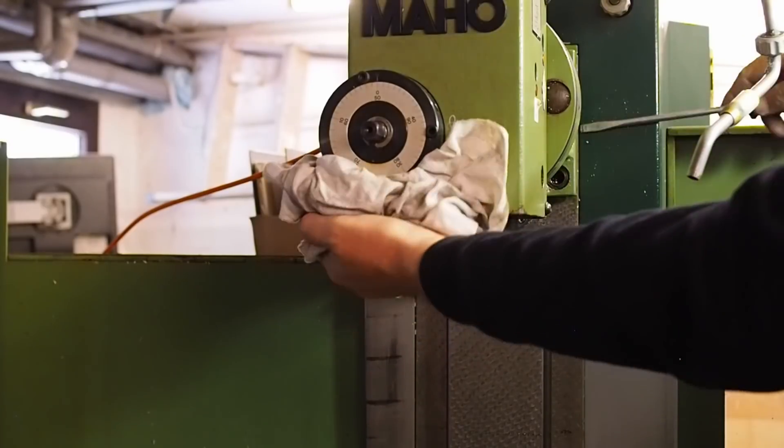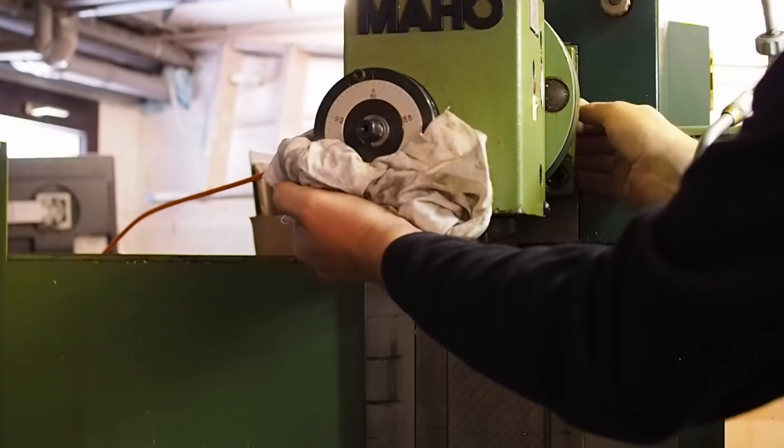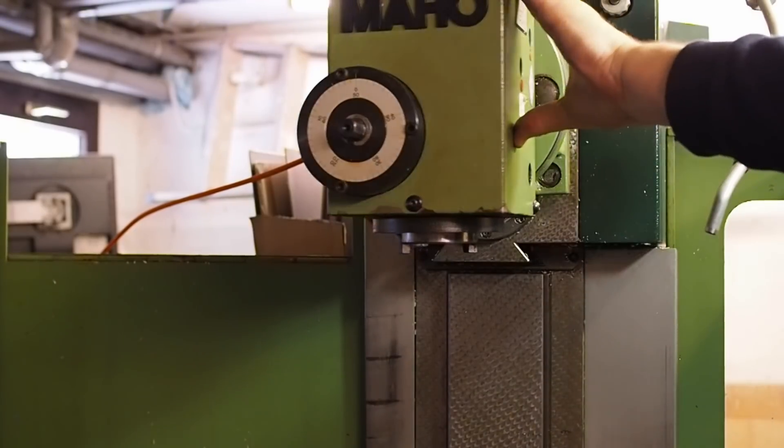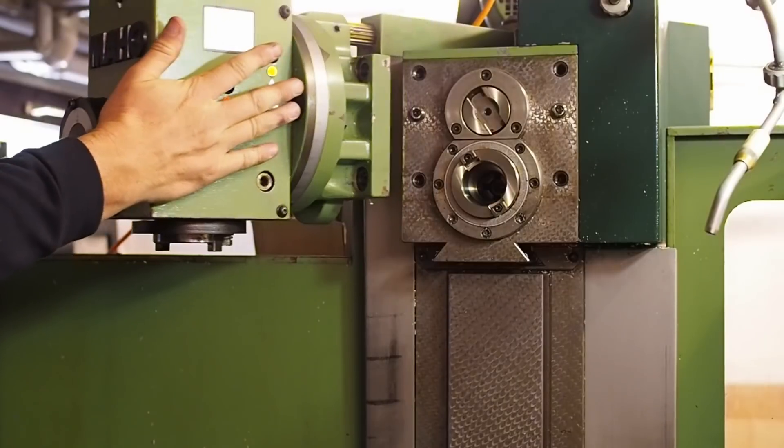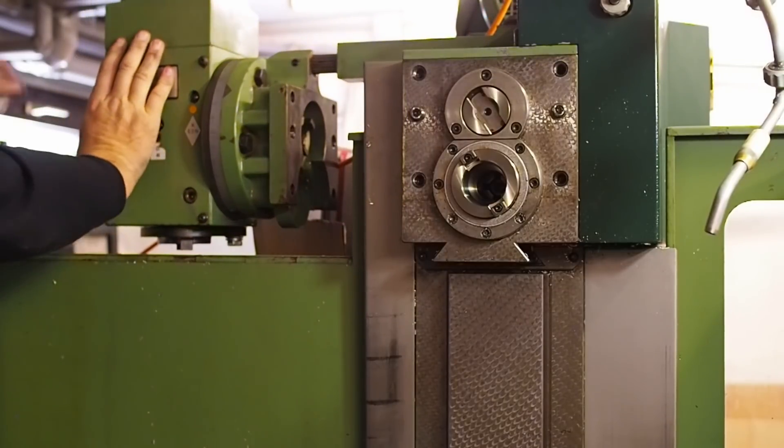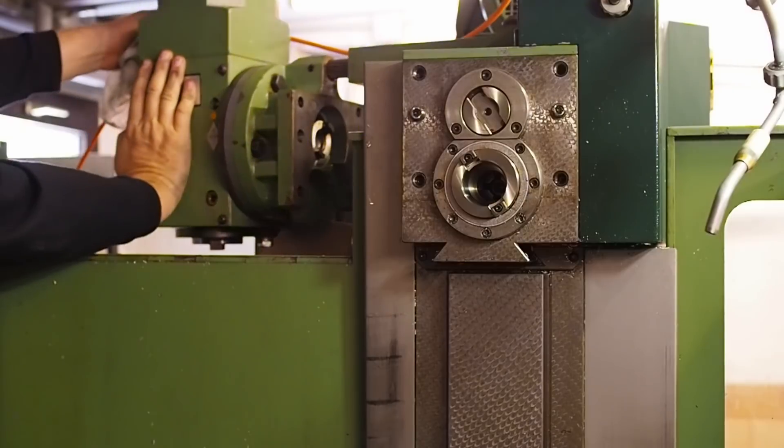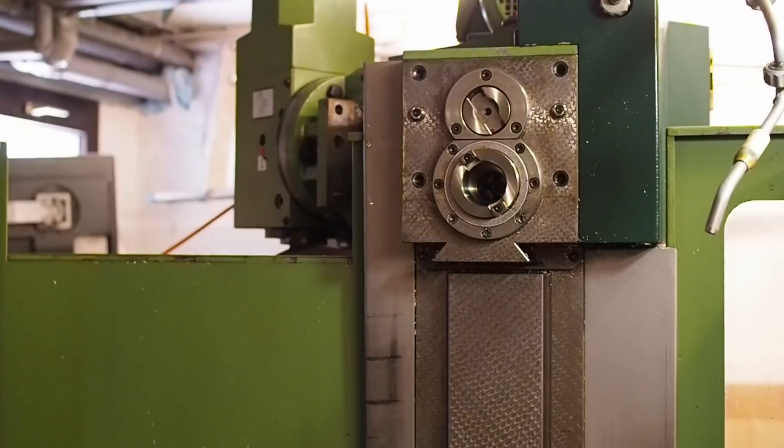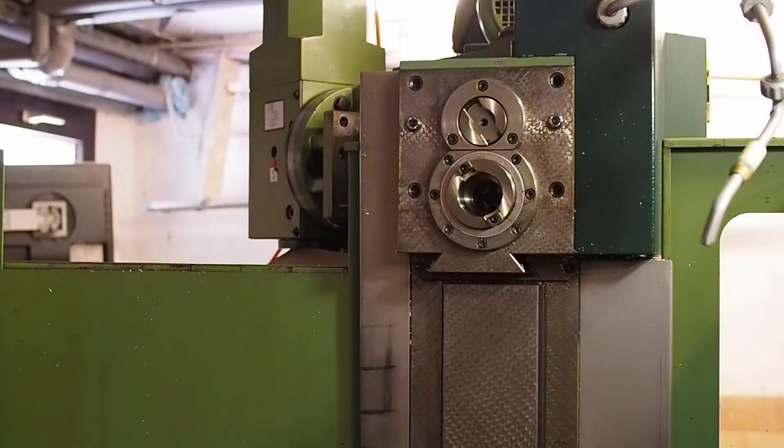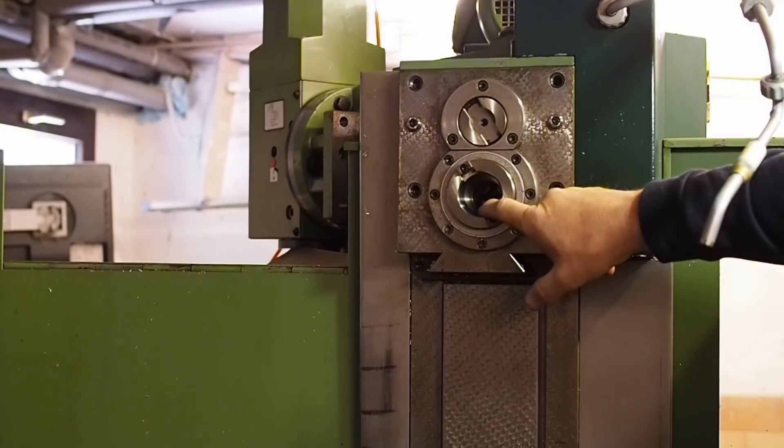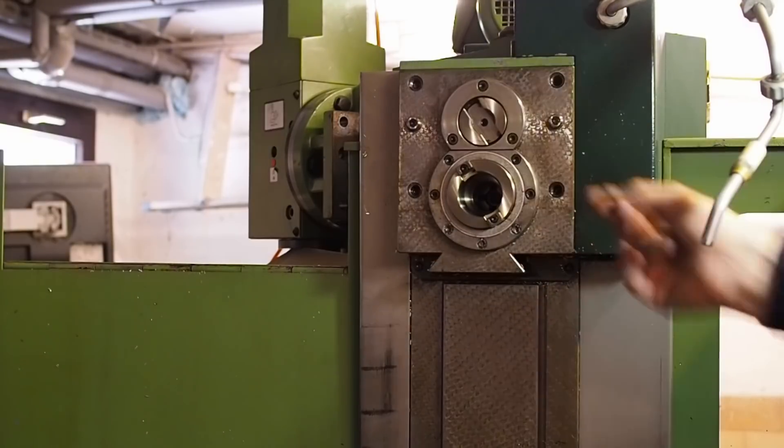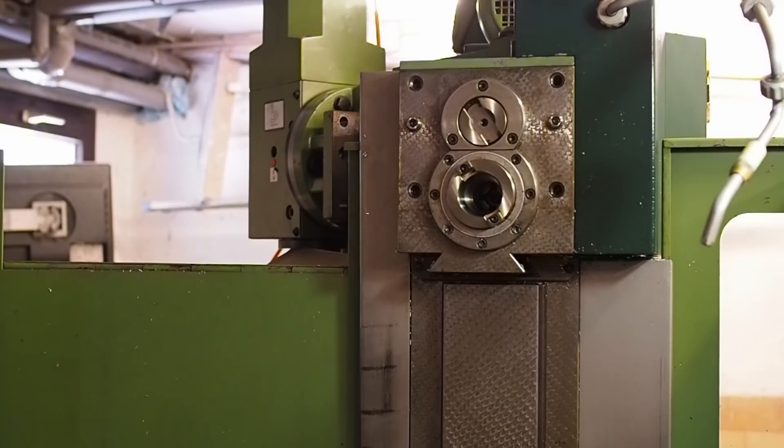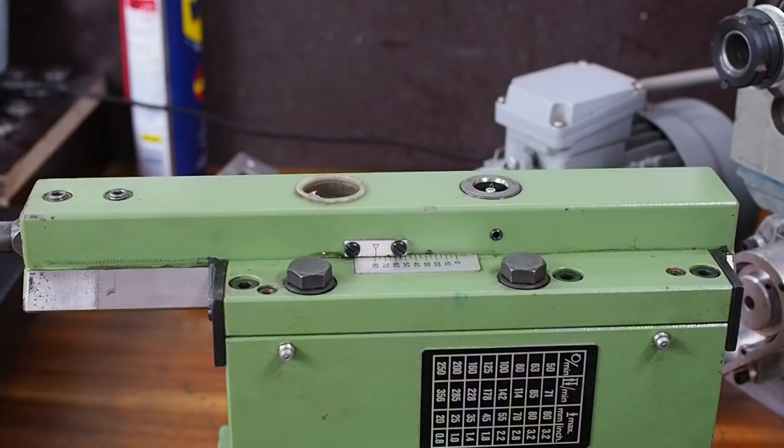So the vertical head just pulls forward off dowel pins and then swings around to the side where there's a latch to lock it. Once the head swung out it exposes the horizontal spindle which is also a number 40 taper and the drive for the vertical spindle or in this case the slotting head.